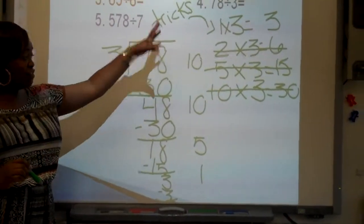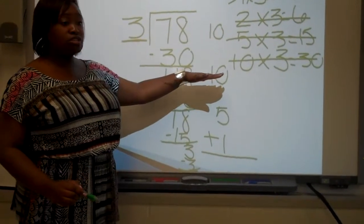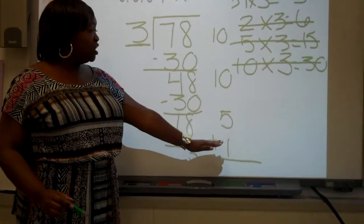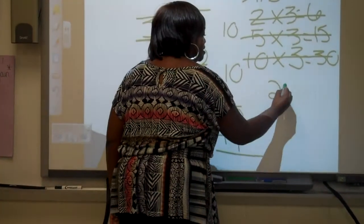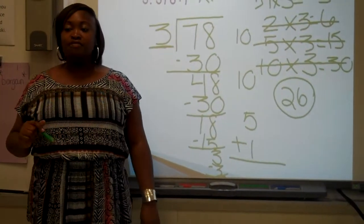Now, since I have all my tricks to the side, I'm just going to add up my tricks. I have 10 plus 10 is 20! Plus 5 is 25! Plus 1 is 26! So 26 is my answer. Raise your hand if you got that correct. Very good job. Good job!